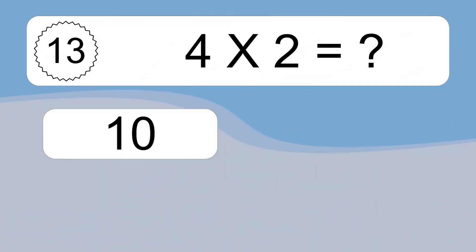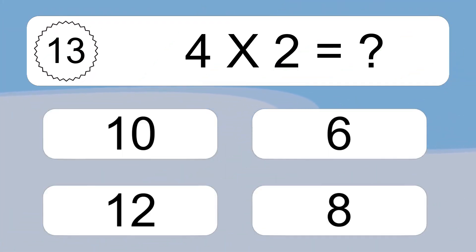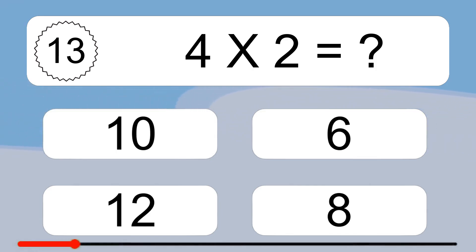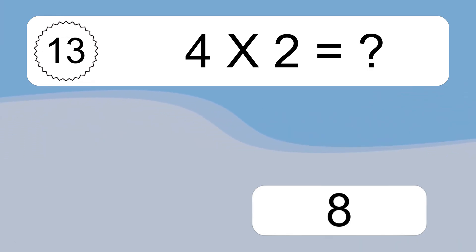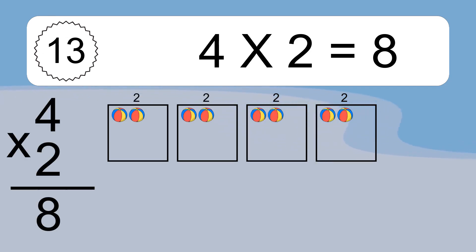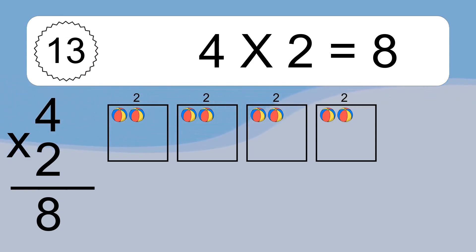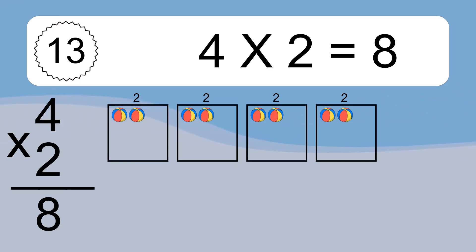Four times two equals what? Four times two equals eight. We have four boxes, and each box has two colorful balls inside. If you count all the balls in all the boxes together, you will have four times two balls. This equals eight balls.